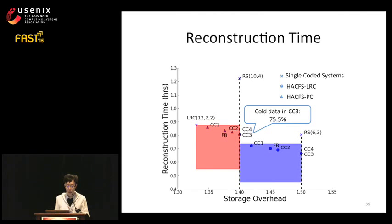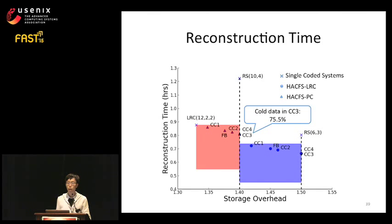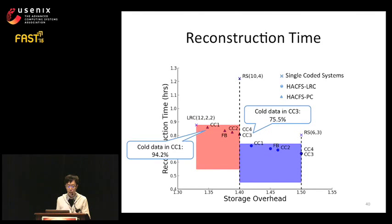Next, we look at reconstruction time, where the Y axis changes to reconstruction time in hours. The system codes most data with the compact code, giving low storage overhead. However, when data is lost, the majority of lost files are compact-coded with higher recovery cost, so when storage overhead is low the reconstruction time approaches that of the compact code. The best cases are CC3 and CC4, which have fewer cold-coded files. CC1, which has the majority of data in the cold state, performs close to the compact code.